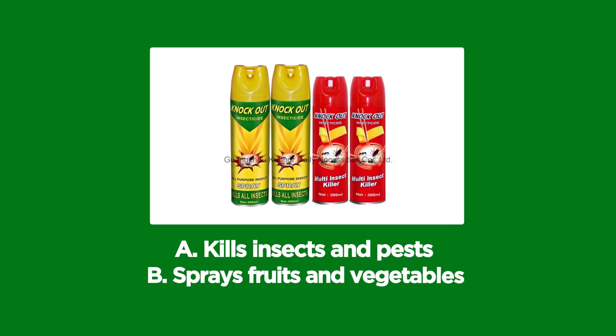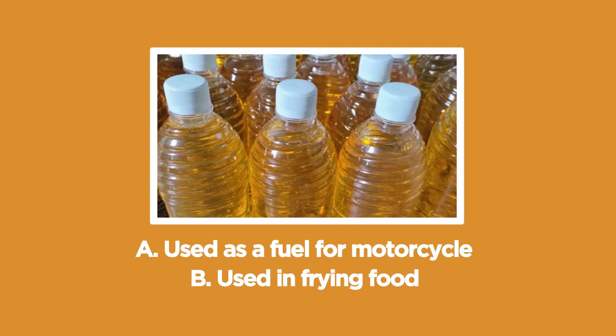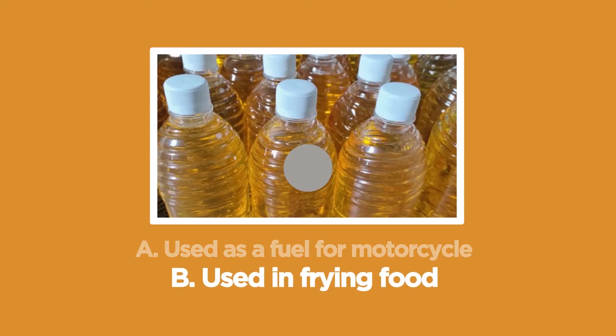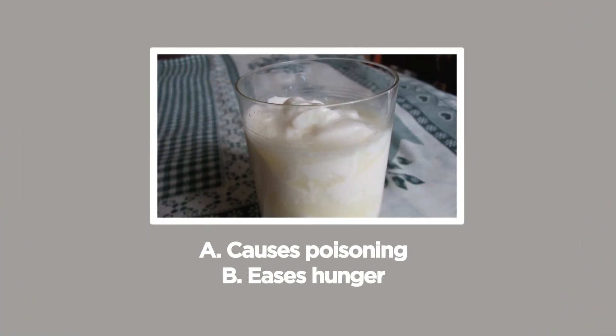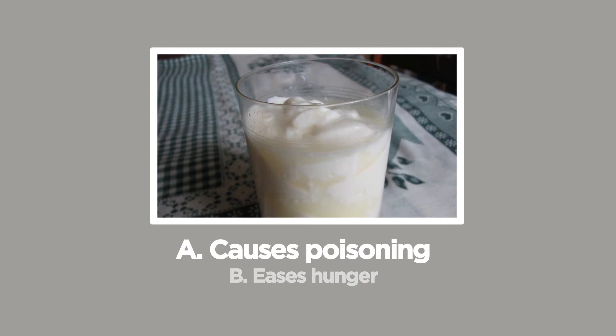Third picture is an insecticide. A: Kills insects and pests. B: Sprays fruits and vegetables. What is your answer? Letter A is correct! Good job, kids! Let's try the fourth: a liter of cooking oil. A: Used as a fuel for motorcycle. B: Used in frying food. What is your answer? You got it right! It's letter B! How about the fifth picture? A bottle of spoiled milk. A: Causes poisoning. B: Eases hunger. Did you get it right? Letter A is the answer! What is your score? Four to five means you were able to grasp the concept. Three and below, keep going! You're almost there!